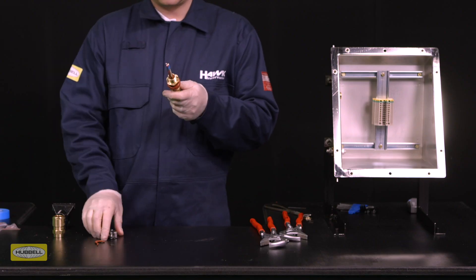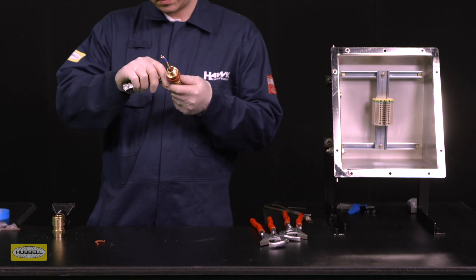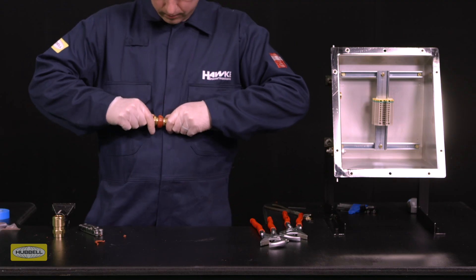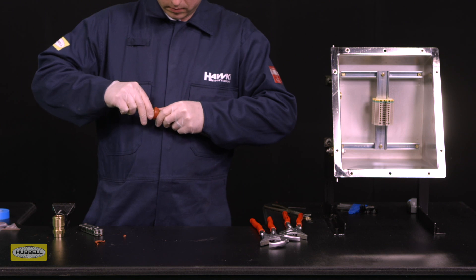Remove any surplus compound, particularly where the compound pot meets the spigot, and continue to press down until the compound pot sits correctly on the spigot component.